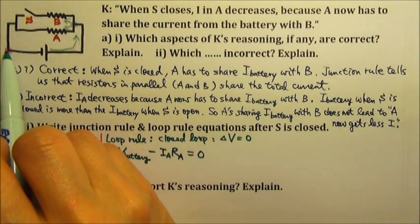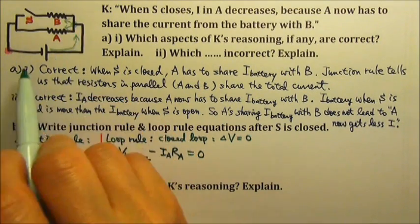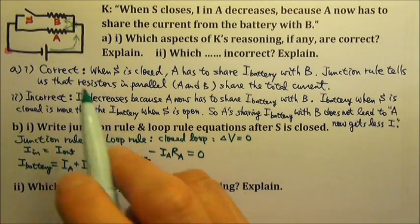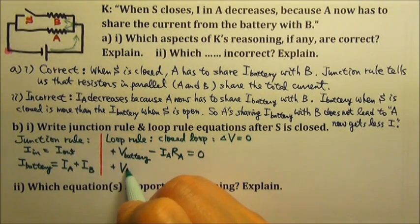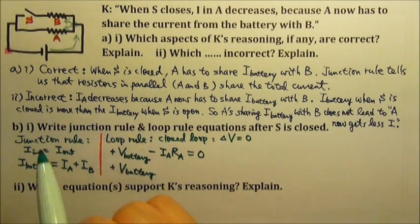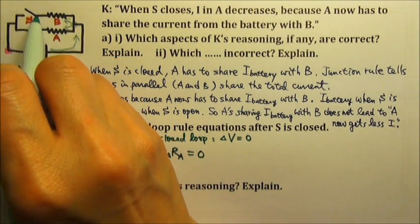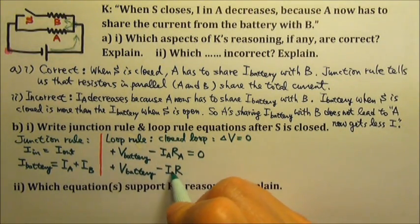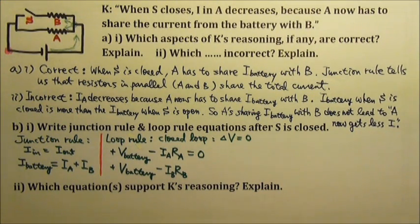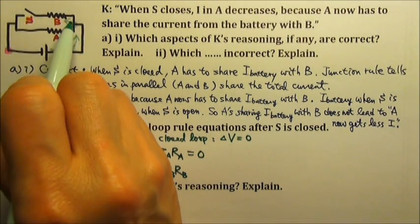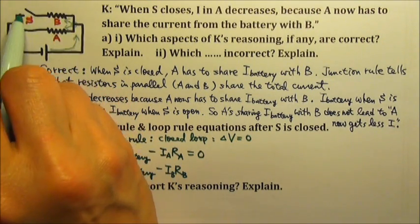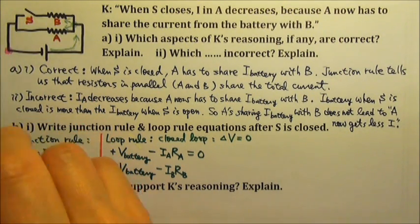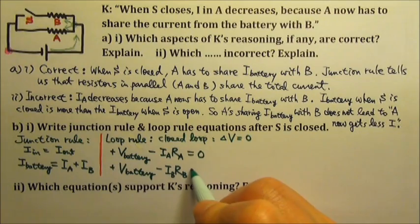For the big loop, I start at the same location and follow the current. Again, I cross the battery from the negative terminal to the positive terminal, so the voltage increases by the battery voltage. Then I follow the current across the resistor — minus I times R — which is IB times RB. Remember the switch is closed, so current flows through this part. Then we're back to the starting point, so delta V equals zero.